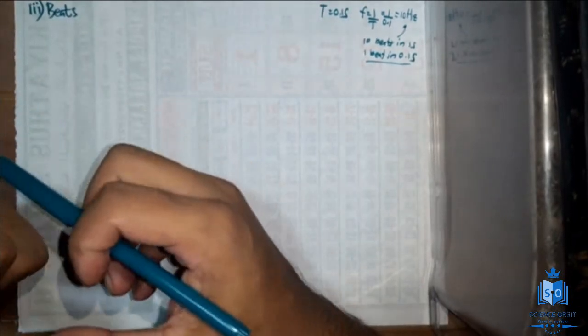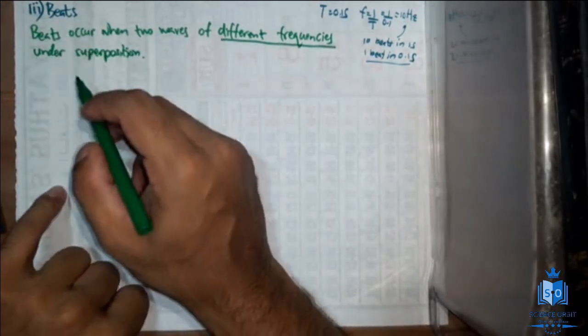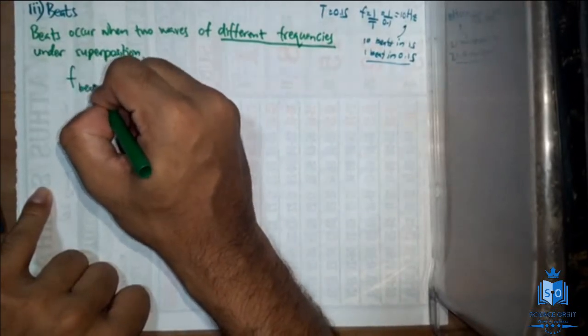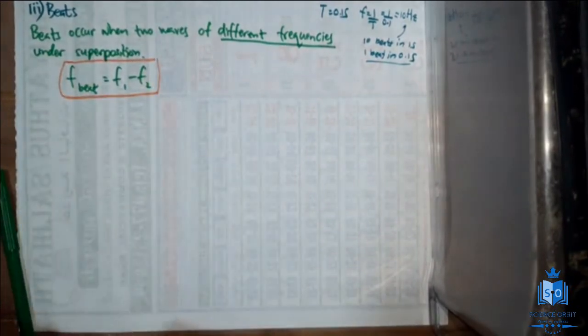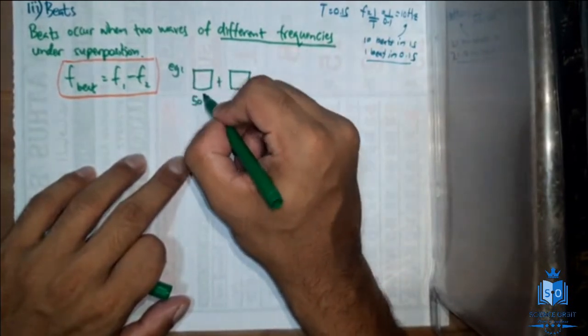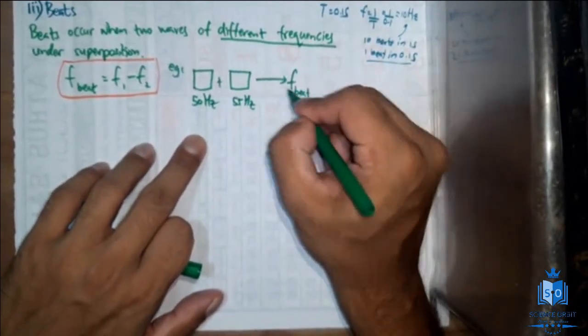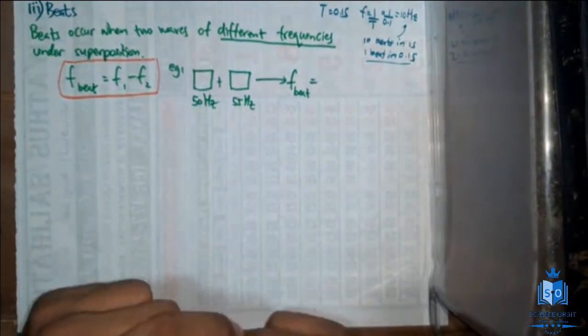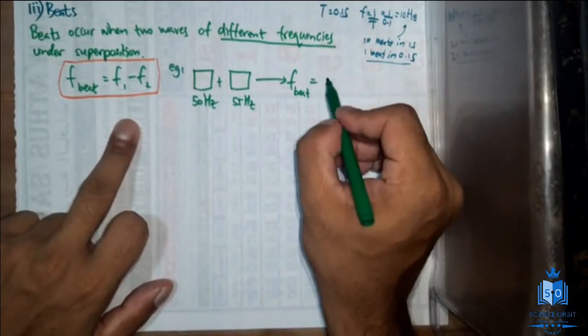Beats occur when 2 waves at different frequencies undergo superimposition. Beat frequency is defined as the difference between the frequencies of 2 sound sources — that is the equation to remember. For example, if you sound two sources together, one at 50 hertz and another at 55 hertz, beats will be formed. The beat frequency is the difference between these two, so taking f1 = 50 and f2 = 55, the answer is 5 hertz.